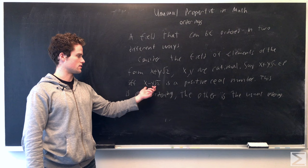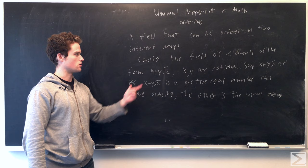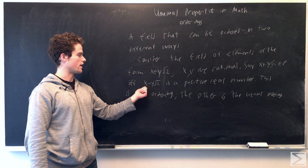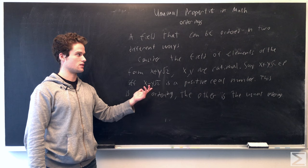And since the usual ordering also satisfies the third axiom, so it's either zero, negative, or positive, then that axiom will also satisfy this new ordering. So this new ordering, where x plus y root 2 is in our set P if and only if x minus y root 2 is a positive real number, is a new ordering. And with the usual ordering, x plus y root 2 is in our set P if and only if it itself is a positive real number. So we have two different orderings on this field.